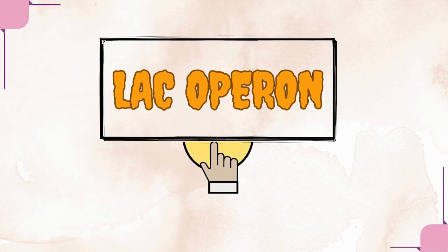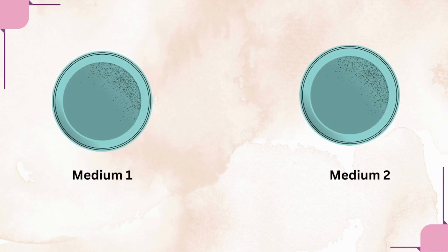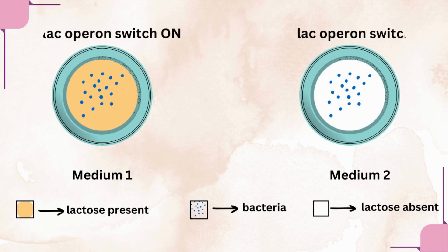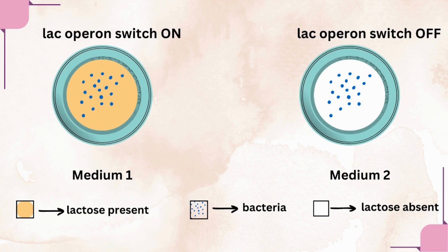Now let's discuss the lac operon. Here, lac represents the lactose sugar. Let's say there are two media — medium 1 and medium 2. In medium 1, lactose sugar is present, whereas in medium 2, lactose sugar is absent. You will observe that lac operon is switched on only in medium 1, because the bacteria will produce the enzymes required to metabolize the lactose sugar. The lac operon is inactivated in bacteria present in medium 2 because lactose is absent.